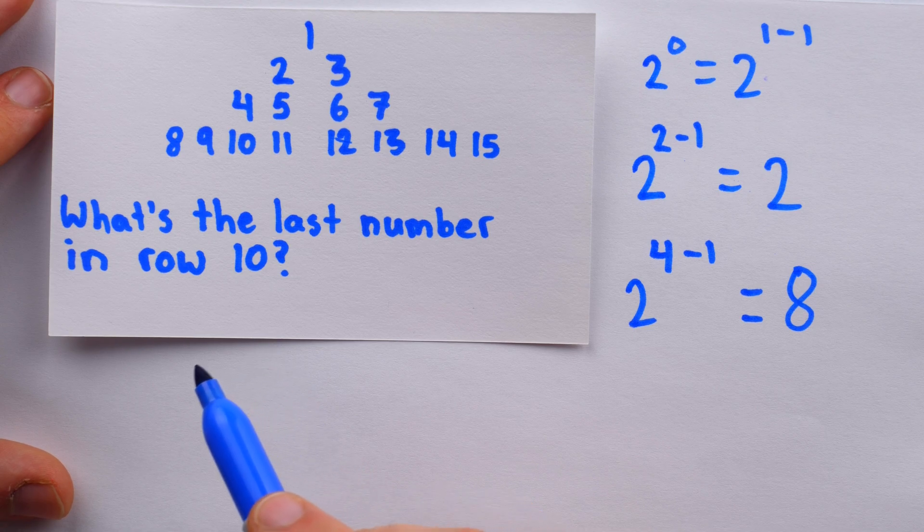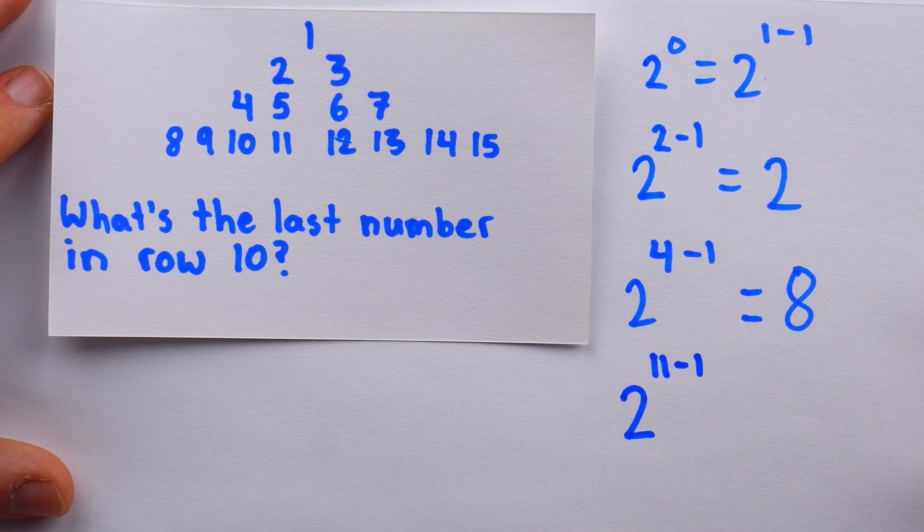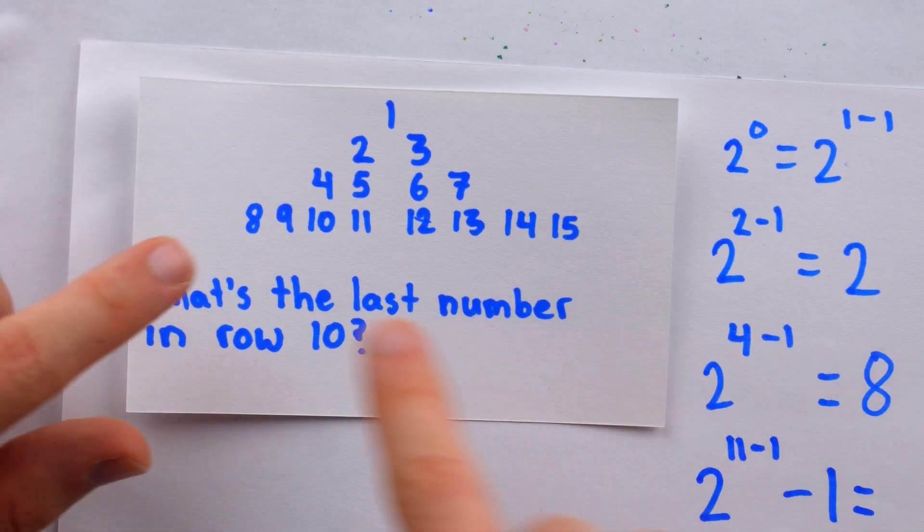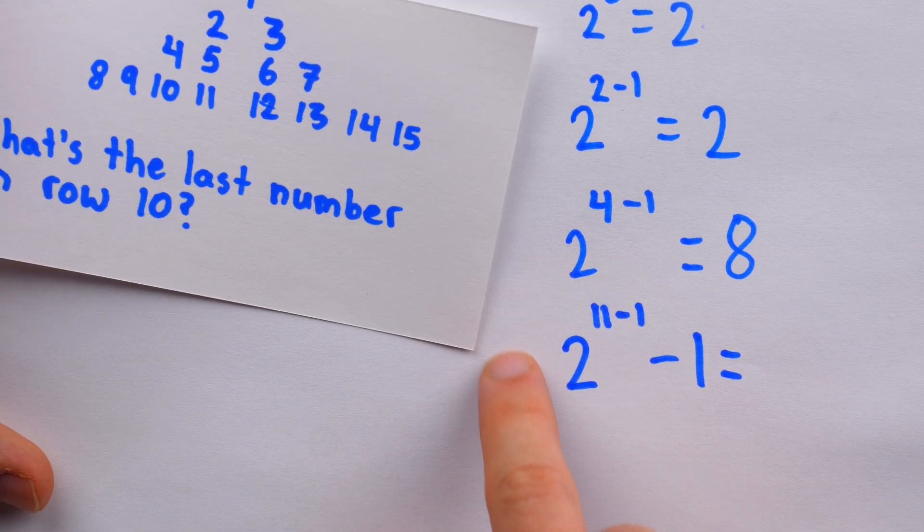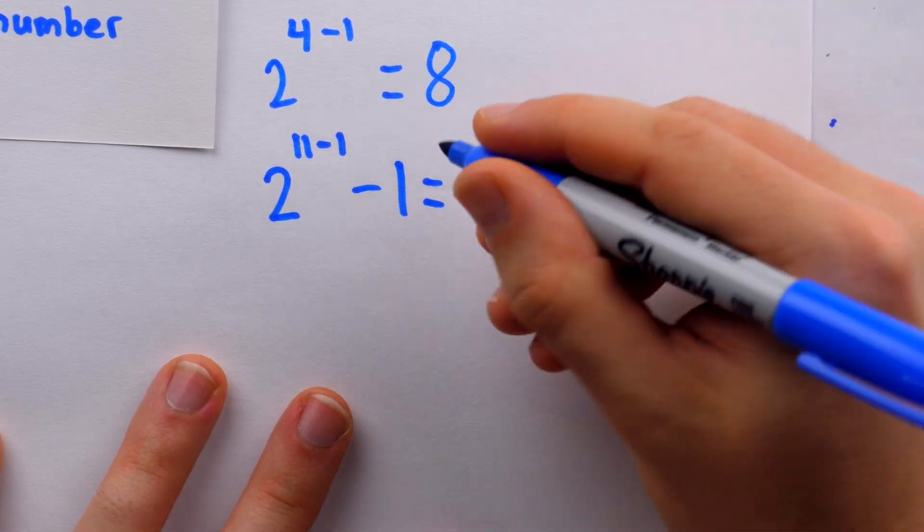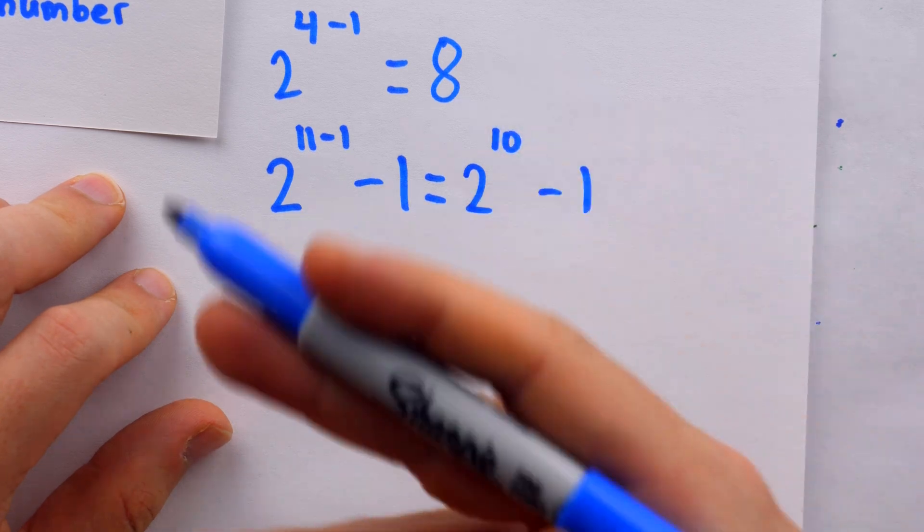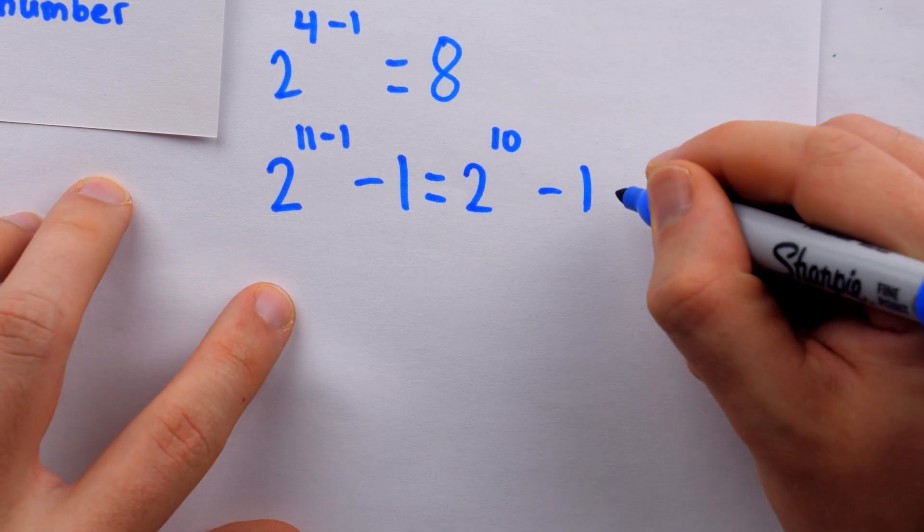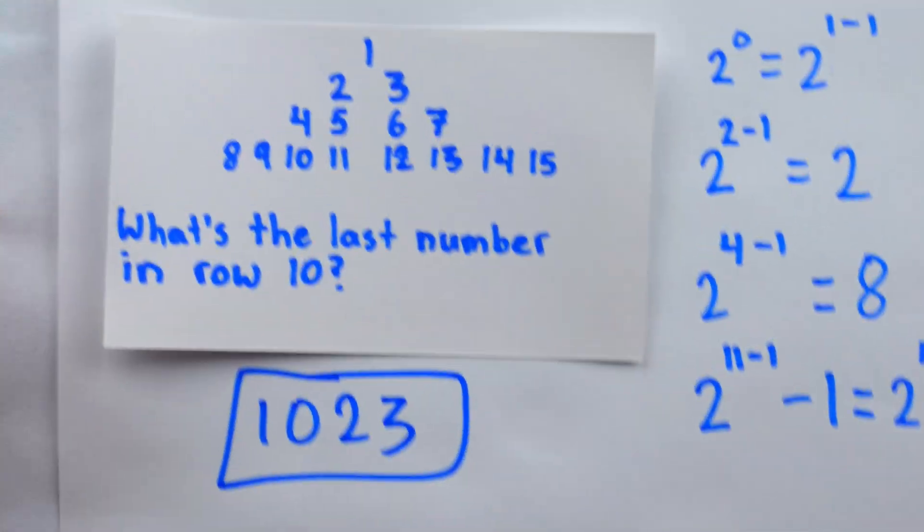Since we see how to calculate the first number in each row using powers of 2, to find the last number in row 10, let's look at the first number in row 11, which would be 2 to the 11 minus 1. And then to get to the last number of row 10, we would just have to subtract 1 from that number. So to get that last number of row 10, we're going to calculate the first number of row 11 and then subtract 1. Now of course, 2 to the 11 minus 1 is 2 to the 10. So we have 2 to the 10 and we need to subtract 1 from that. If you don't know 2 to the 10 offhand, it's pretty easy to just double numbers until you figure it out: 1, 2, 4, 8, 16, 32, 64. Go on until you get to 2 to the power of 10. Turns out it's 1024. And we're subtracting 1 from that. So our final answer, the last number in row 10 is 1023. Let's move on to our final problem.